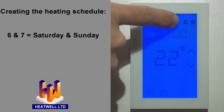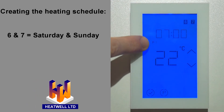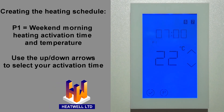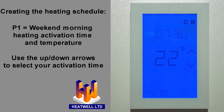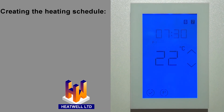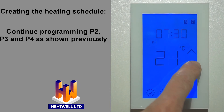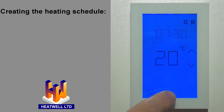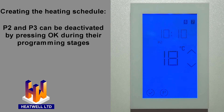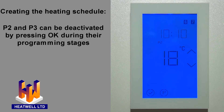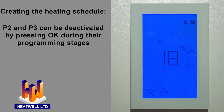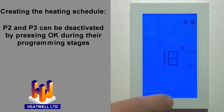Now Saturday and Sunday will be displayed, as will P1 again. Programming the first weekend activation times and temperatures is exactly as it was before. In this case, we'll select 7:30 a.m., then press the program button. Now we can select the times and temperatures for P2, P3, and P4 just as we did for the weekdays. If you'd rather have your floors constantly warm from morning until night during the weekends, you can skip the P2 and P3 settings. To do this, during the P2 and P3 programming stage, simply press the OK button. The P2 and P3 options will then be blanked out.